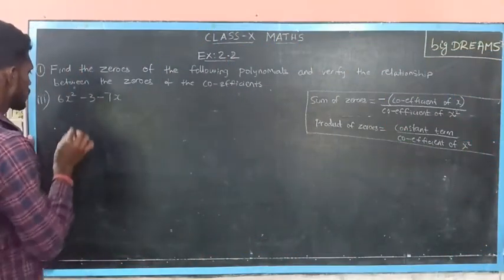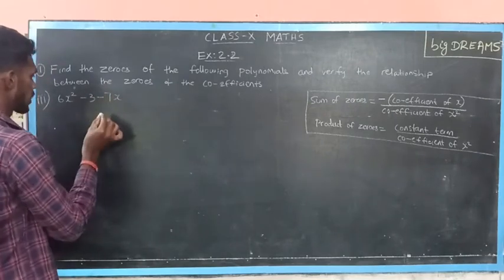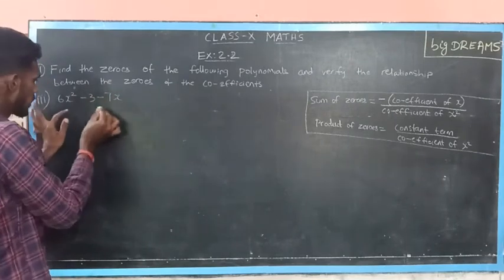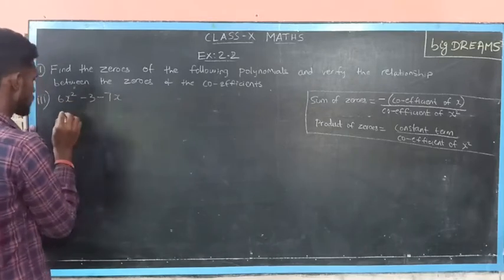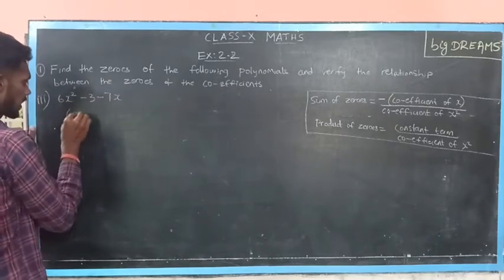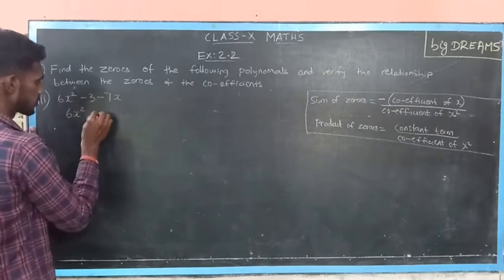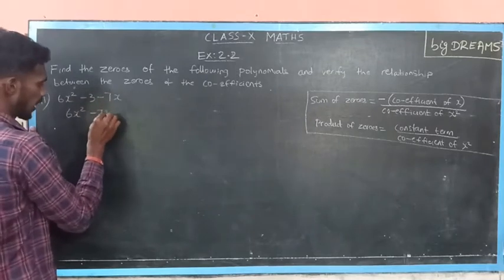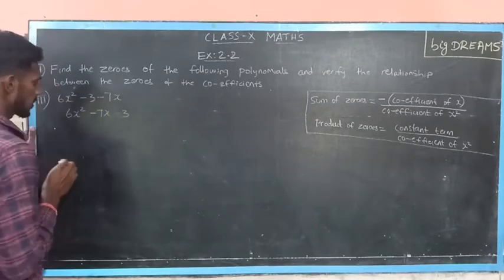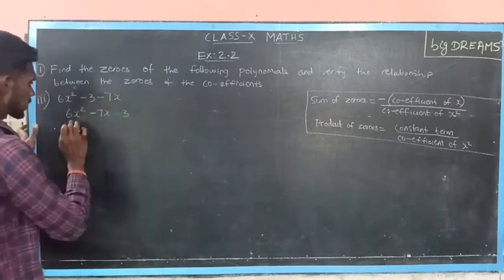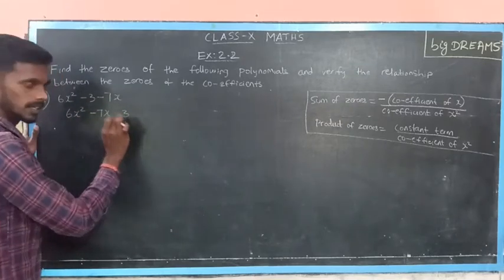Next, the third subdivision: 6x squared minus 3 minus 7x. Look carefully, it is not in standard form. First, we have to write this in standard form. So, it can be rewritten as the x squared term, then the x term, and finally the constant term. So, the given polynomial is 6x squared minus 7x minus 3.